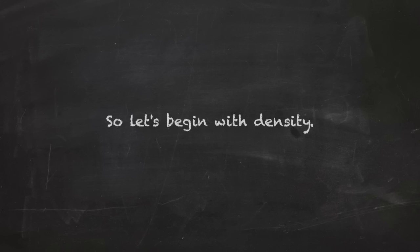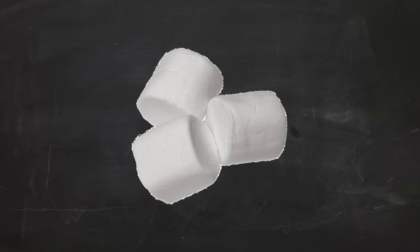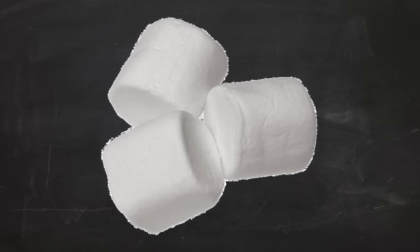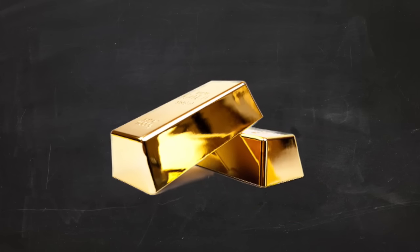So let's begin with density - how tightly packed an object is. A marshmallow, for example, is light and fluffy and thus has a very low density. Something like gold is really hard and heavy and thus has an extremely high density.